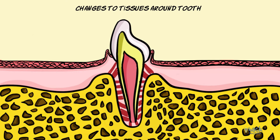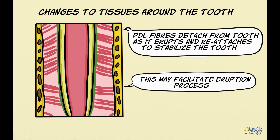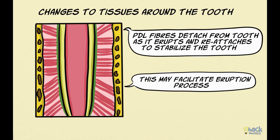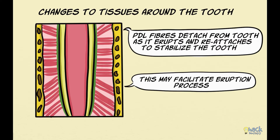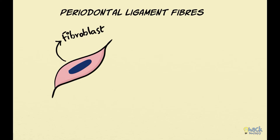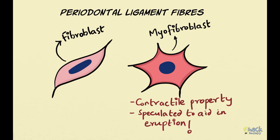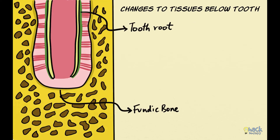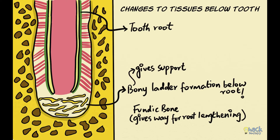As the tooth erupts and the root elongates, the periodontal ligament fibers become more prominent, attaching to the root on one side and bone on the other. It is speculated that the fibers detach from the tooth as it erupts and then reattach to stabilize it, hypothesized to occur throughout the eruption process. Periodontal ligament fibers also harbor myofibroblasts, a special type of fibroblast with contractile properties speculated to aid in tooth eruption. The fundic bone below the tooth germ gives way for root lengthening, and as the tooth erupts, bone is deposited in the form of a bony ladder to support the erupting tooth.